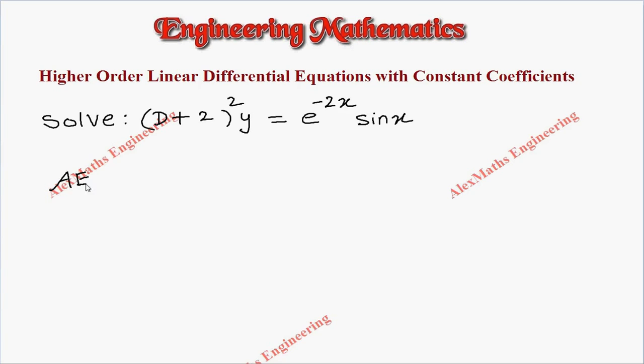As a first part, we have to write the auxiliary equation which is (m+2)² = 0. From this we get two values for m, both are -2.